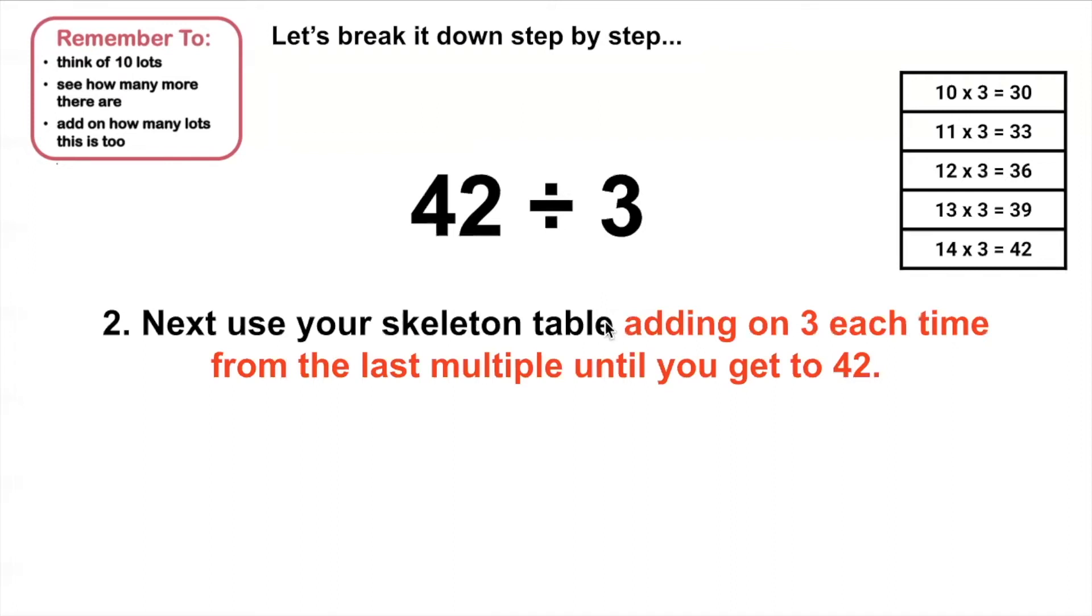I'm then going to use my skeleton table, adding on 3 each time from the last multiple until I get to 42. So I'm going to start with my 10 lots of 3, which is 30.